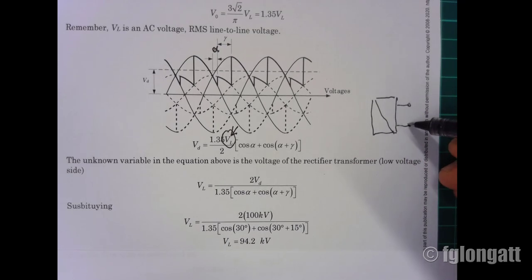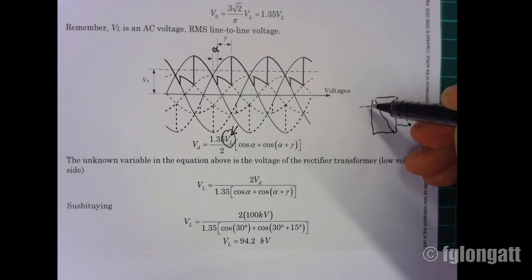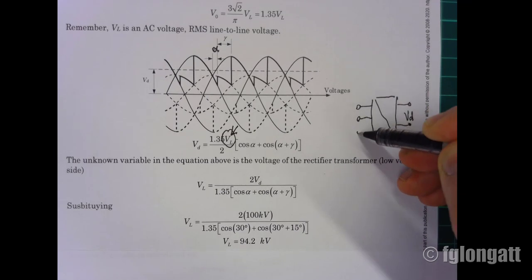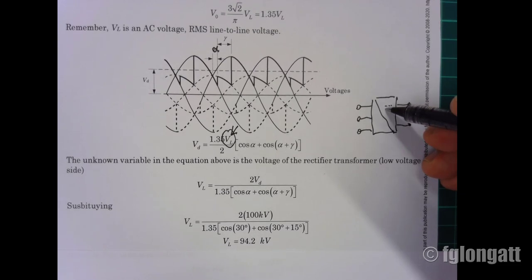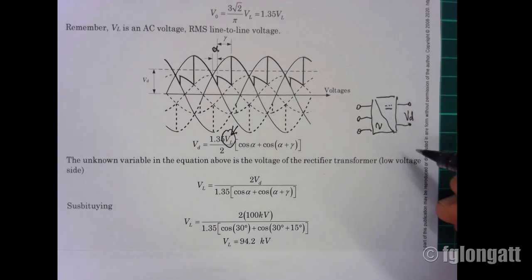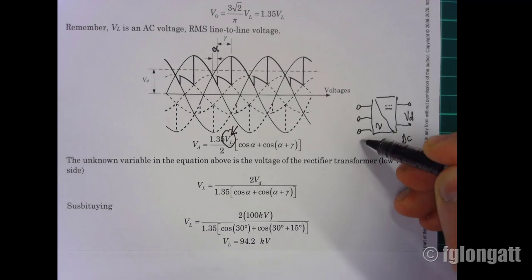This is the DC side, this is the AC side. What we are looking for is VL, and VL is the line-to-line voltage.